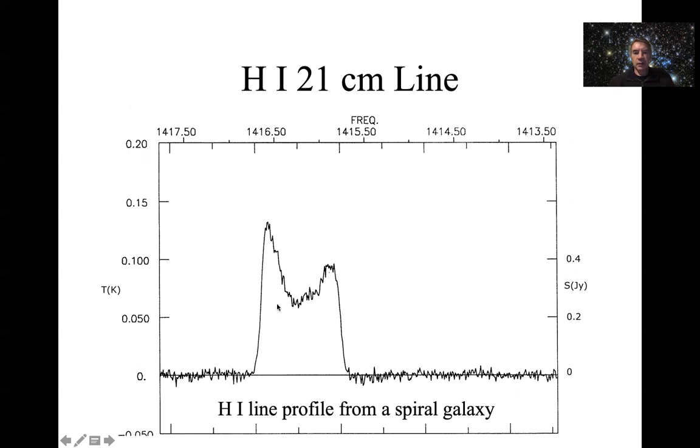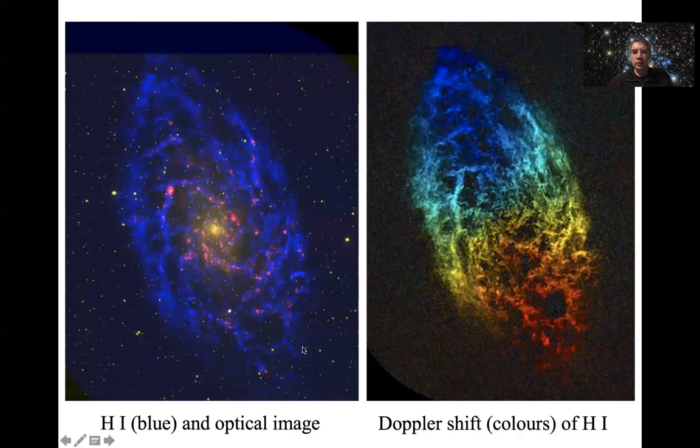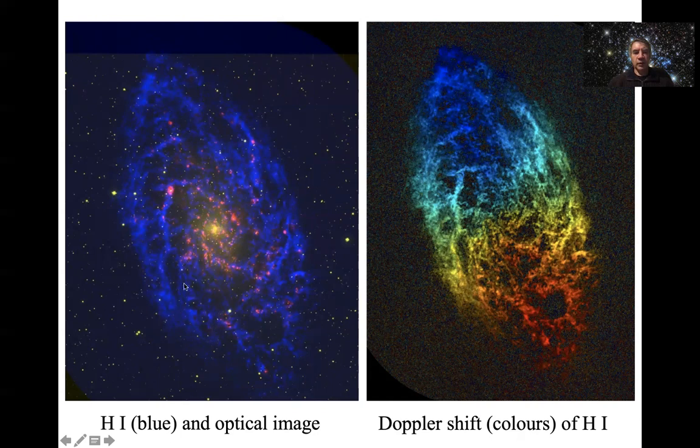This double-peakedness in a spiral galaxy, as illustrated on the next slide, is due to the rotation of the spiral galaxy. On the left here, the blue colors are showing you the intensity of the 21 centimeter line, and in the background you've got an optical picture of this spiral galaxy.